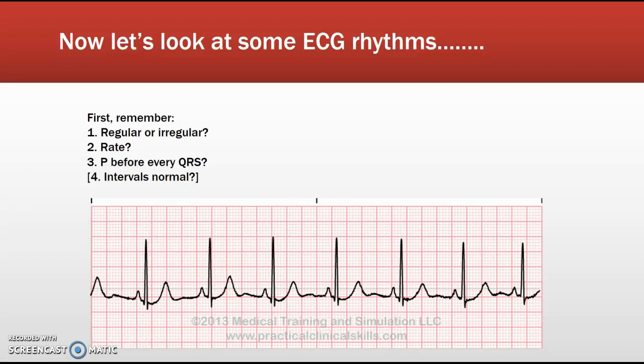Step three: is there a P wave before every QRS? As you can see — here's a QRS, and there's a P wave, P wave, P wave, P wave. If the P wave is before every QRS and looks the same size and shape, you can assume this rhythm is originating in the atria and the SA node. In more advanced classes you'd look at the PR and QRS intervals, but not for this class. So here you have a regular rhythm with a rate of about 70 and a P wave before every QRS. What do you call that? Normal sinus rhythm. Do you need to do anything? Monitor the patient's condition, and check on your patient just to make sure.